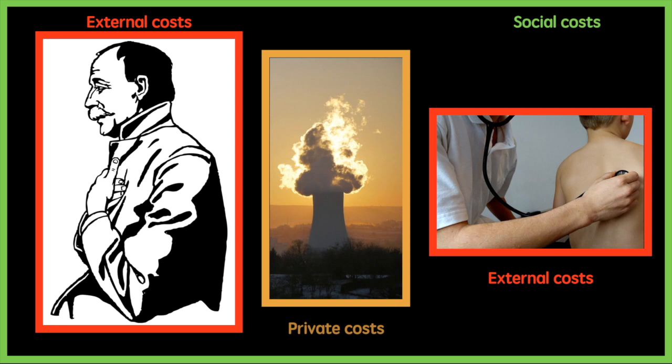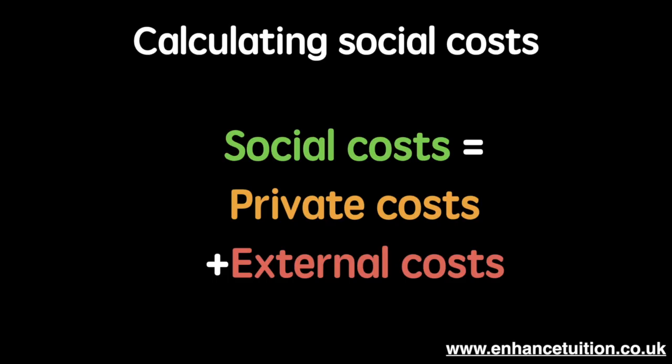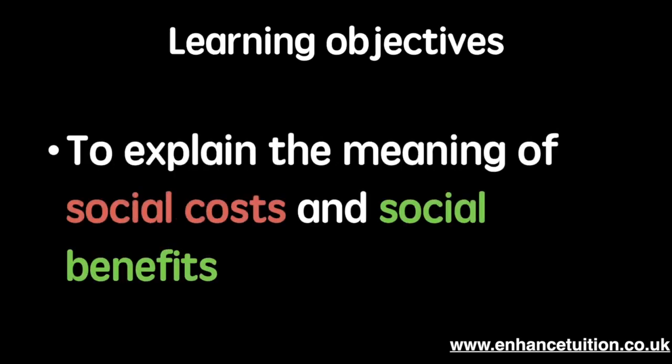The formula for social costs is now obvious. They are equal to private costs plus external costs. By now you should have a clearer picture of social costs and social benefits. I hope this video clarified the two concepts.